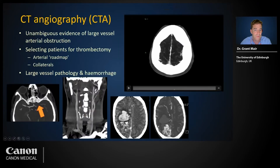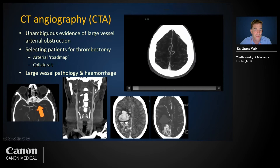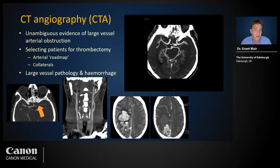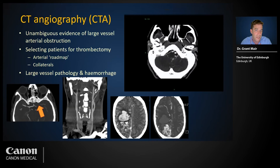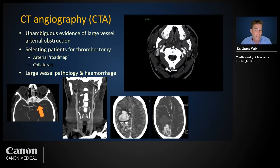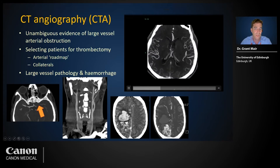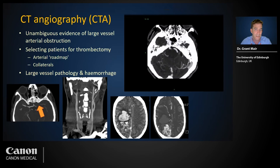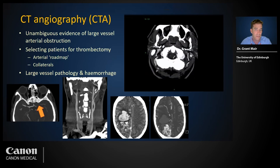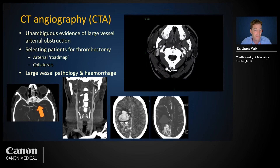CT angiography (CTA) is used in stroke to provide unambiguous evidence of large artery obstruction, particularly for patients being considered for thrombectomy. CTA also provides a roadmap of the neck vessels used during thrombectomy to access the intracranial arterial blockage. Most CTA provides only a snapshot of the arteries at a single moment in time; collateral circulation is better assessed using multi-phase CTA to appreciate delayed filling.